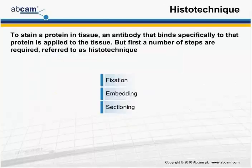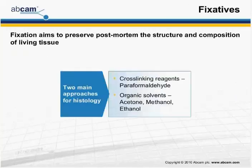Let's begin with sample preparation. Collectively these steps are referred to as tissue processing, which includes fixation, embedding, and sectioning. The point of fixation is to preserve the postmortem structure and composition of a living tissue. There are two main approaches: one can use a cross-linking reagent such as paraformaldehyde, or an organic solvent such as acetone, methanol, or ethanol.